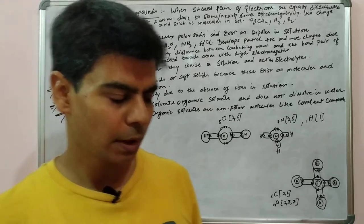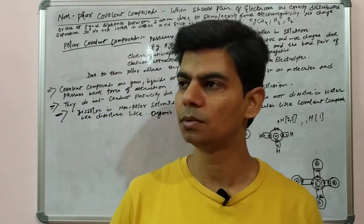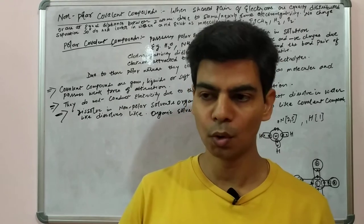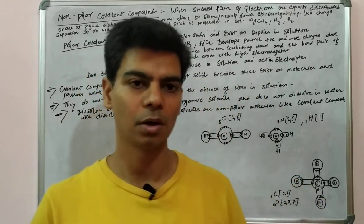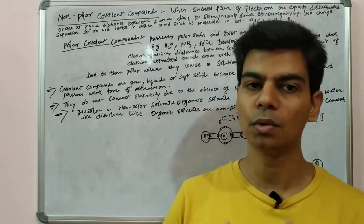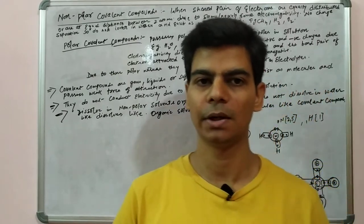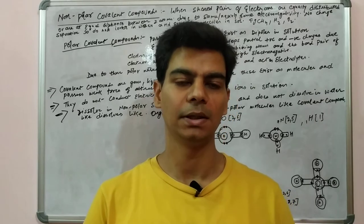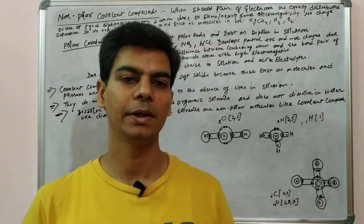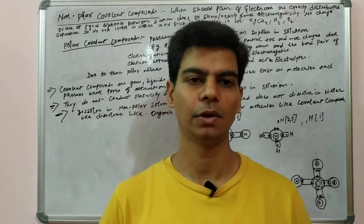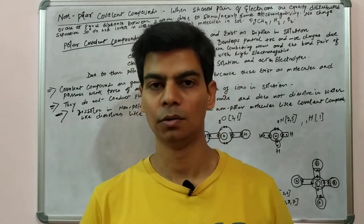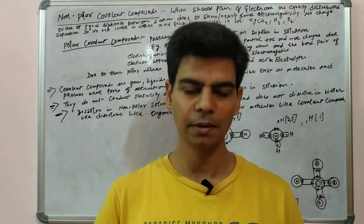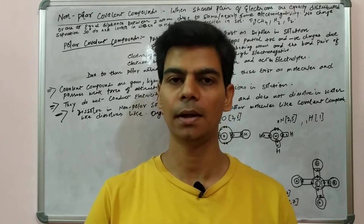In polar covalent compounds, what happens is that when a covalent bond forms between two dissimilar atoms, and if the electronegativity difference between those two dissimilar atoms is large — for example in HCl, chlorine's electronegativity is 3 and hydrogen's is 2.1 — due to this large electronegativity difference, the shared pair of electrons is affected.